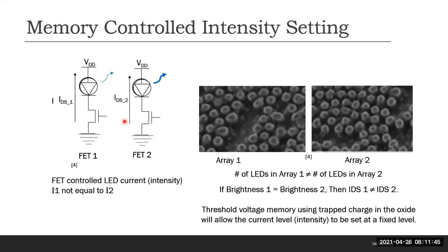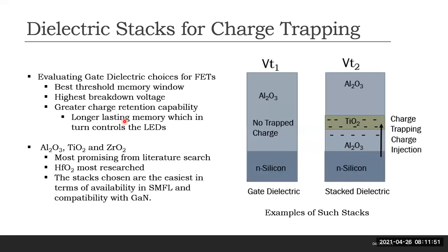This can be done by the memory device which would allow the current to be fixed once set. This can be done by charge trapping to alter the threshold voltage individually, which depends on the gate dielectric. Finding the best gate dielectric is important as it will give better control over the FETs, won't break down easily, and gives longer lasting memory to control the LEDs.